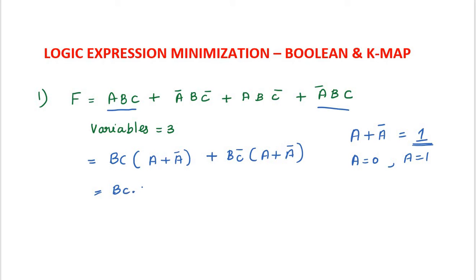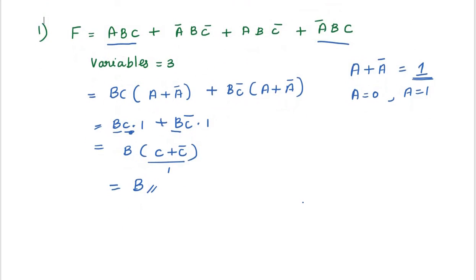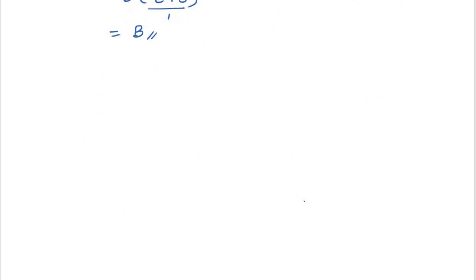So BC(1) + BC'(1). Take B as common: B(C + C'). Again, C + C' = 1. So the answer is B. This is the way to minimize the logic expression using Boolean law.